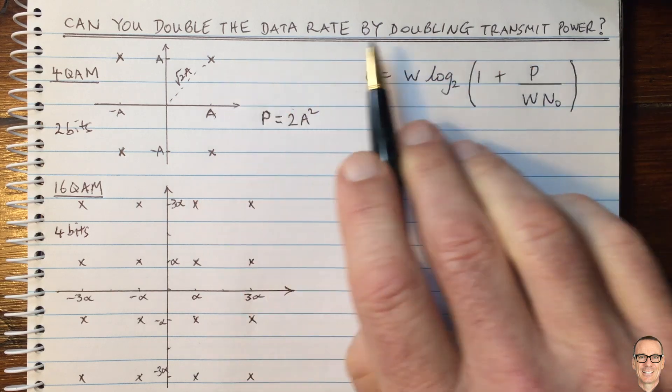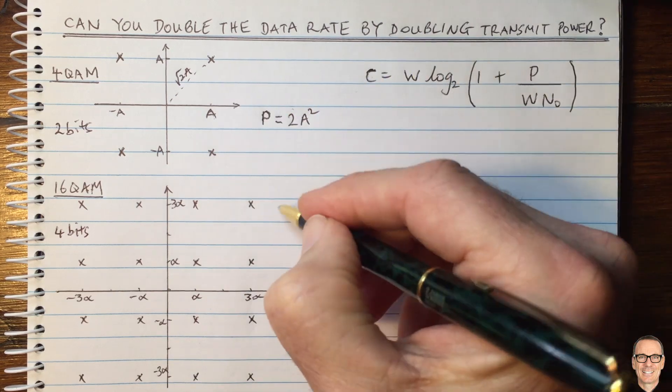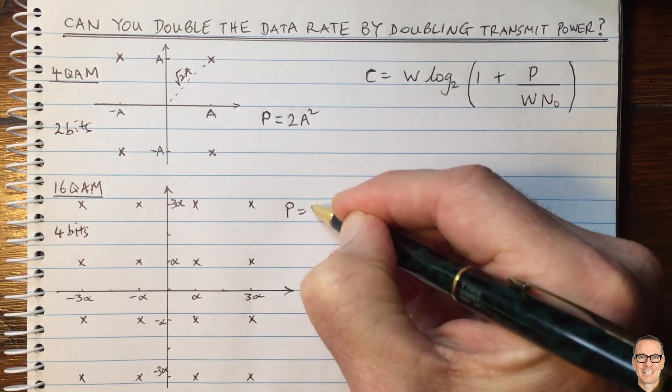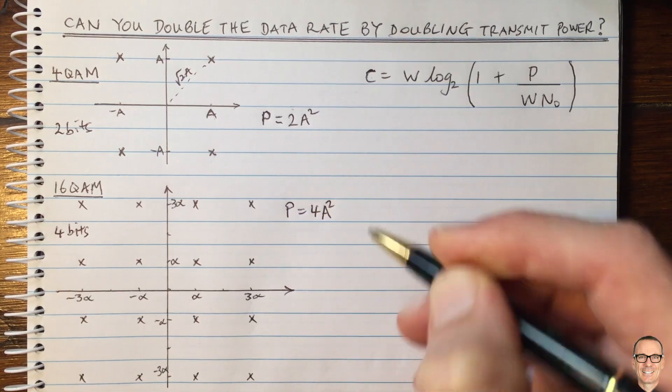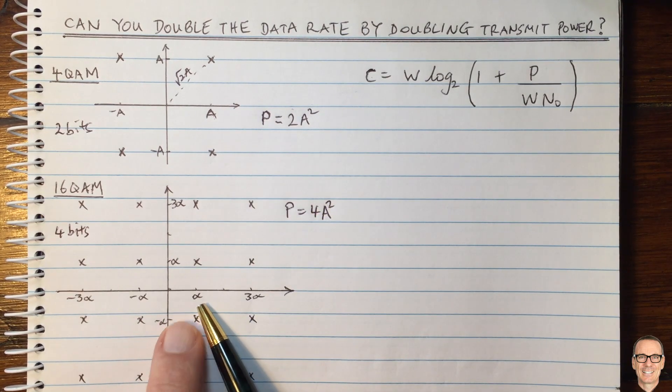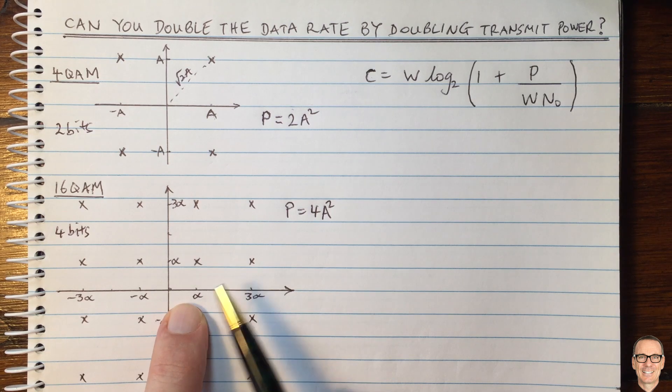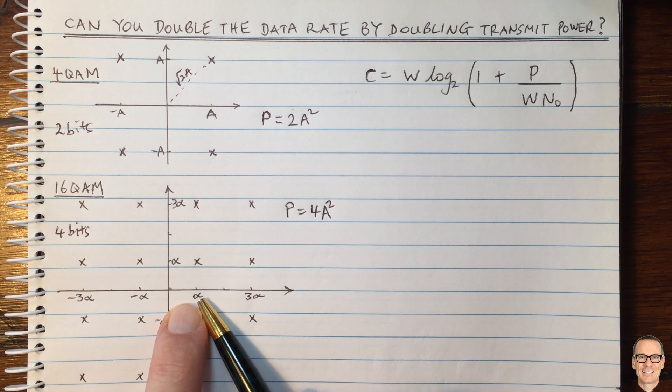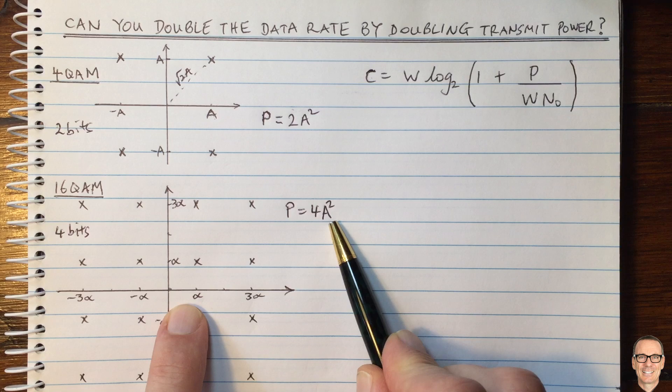If we're going to double the transmit power, then we would want P to equal four times a squared. And I've drawn this constellation here with a generic distance of alpha. So let's try to find this value of alpha that matches this power.